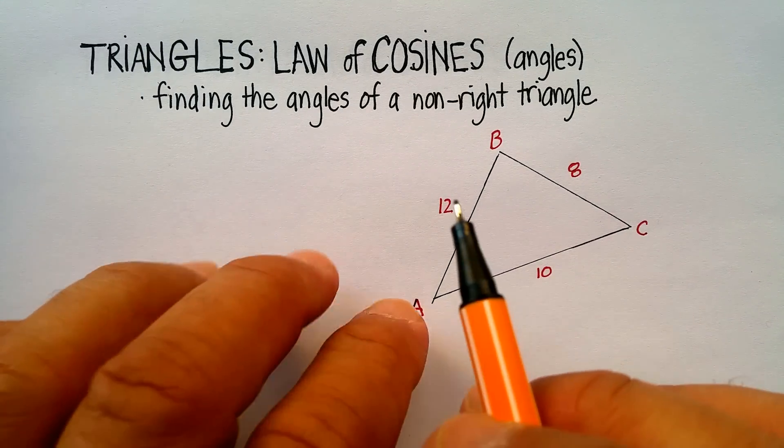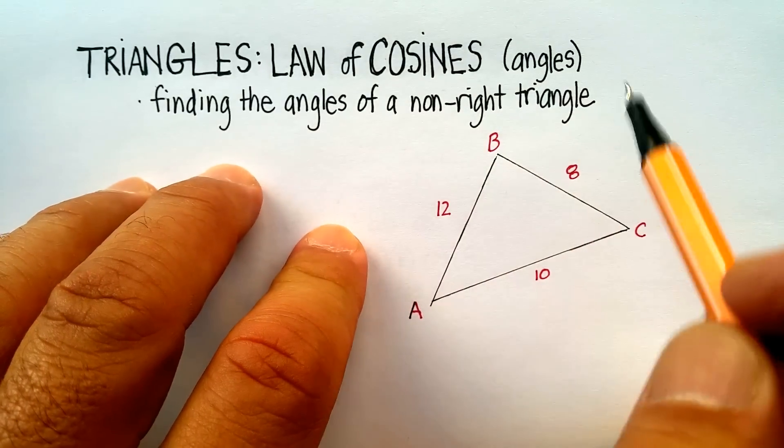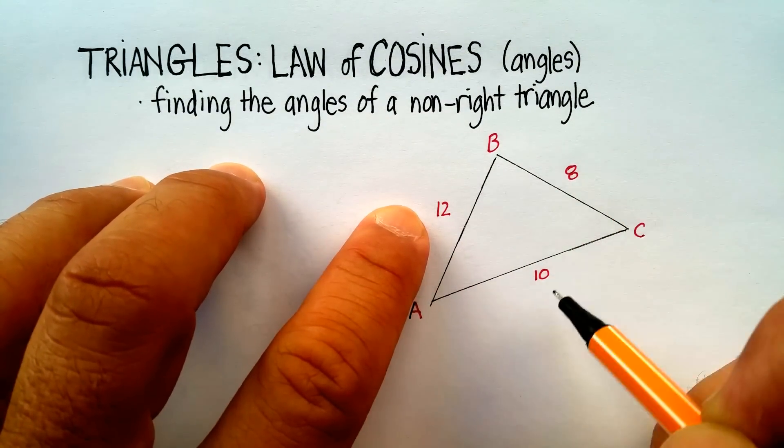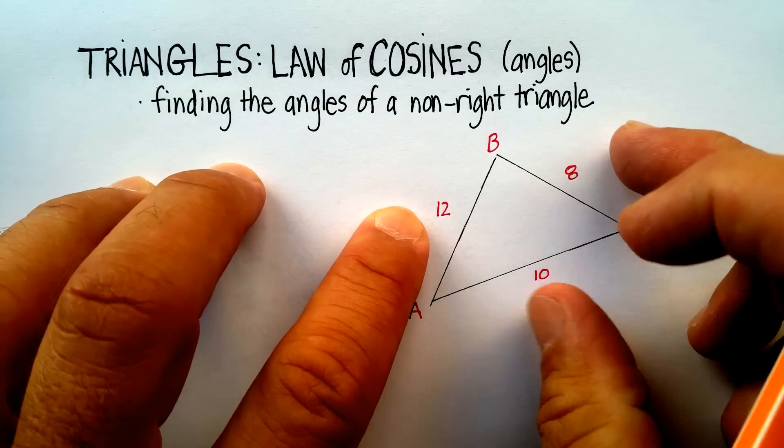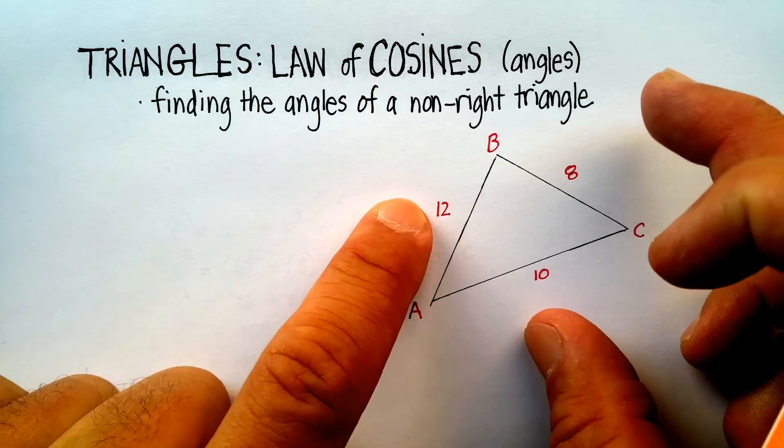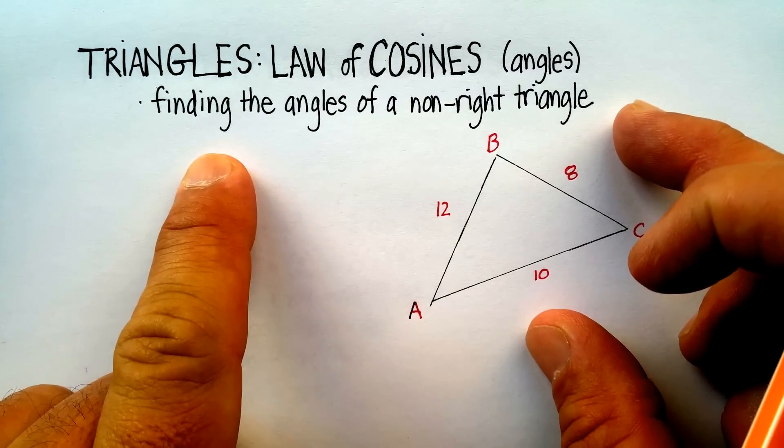In this video we're going to talk about the law of cosines, but how to find the angles when I know three sides of the triangle. And that's the only time that you can actually use the law of cosines, is when you know all three sides. Remember, this is a non-right triangle.